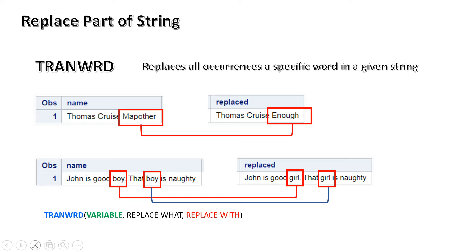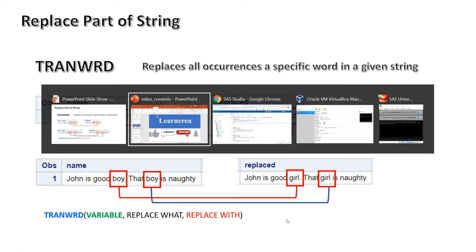Let's look at the syntax. First you need to type the function name TRANWRD, then you provide the variable name — in this example, the variable is 'name'. Then SAS asks what is it that you want to replace — in this example 'map author'. Then you provide the value you want to put in place of it, which was 'enough'. So you need to put 'enough' in that position.